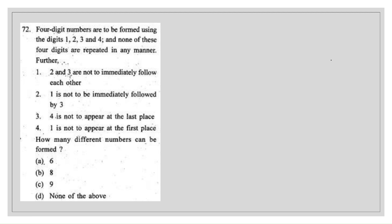Hello everyone, welcome to Ansarkari. In this video we'll be continuing with UPSC questions related to the topic of number systems. The first question says: four-digit numbers are to be formed using the digits 1, 2, 3, and 4, and none of these four digits are repeated in any manner. So we'll draw four dashes and they are to be formed using digits 1, 2, 3, and 4 with no repetition.